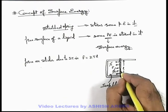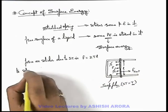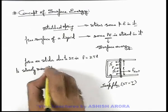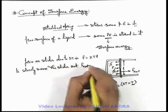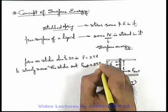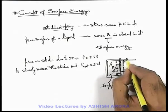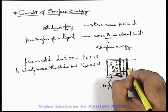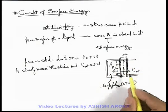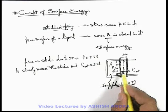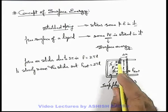Now if we wish to move the slider in the outward direction we need to apply an external force. To slowly move the slider out, this external force must be equal to the force applied by the surface tension, that is 2tl. And say if we displace the slider by distance delta x in the outward direction, the surface area of the film will also increase and some work is done by the external force in pulling the slider outward. Whatever work is done by the external force will be stored in the film in the form of its surface energy.